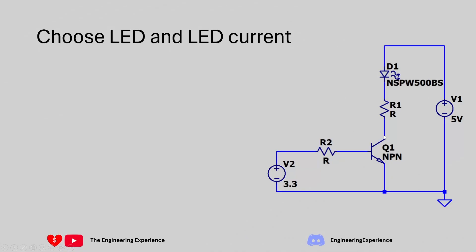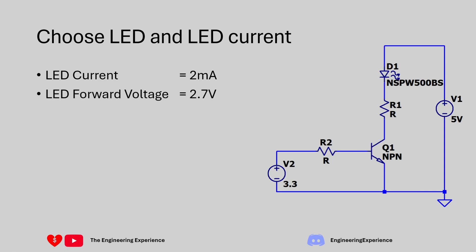First, choose your LED - that means the color, brightness, and how brightly you want it to operate. Once you've chosen the LED, you can determine the current you want it to run at by looking at the datasheet, or by buying some LEDs and testing them. For this example, let's say we want a current through the LED of 2 milliamps, and our chosen LED has a forward voltage drop of 2.7 volts - both details available on the component datasheet.